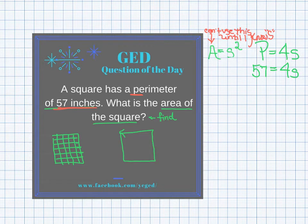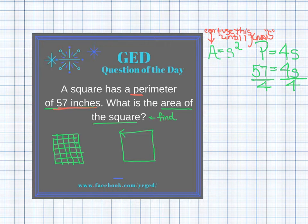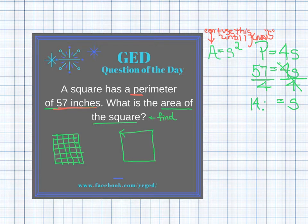This is just a one-step algebraic equation. I want to get s alone — currently s is multiplying with 4, so I'll do the opposite and divide. The rule of algebra is you can do whatever you want to an equation as long as you do it to both sides. Dividing both sides by 4, the 4s becomes just s, and 57 divided by 4 is 14.25.